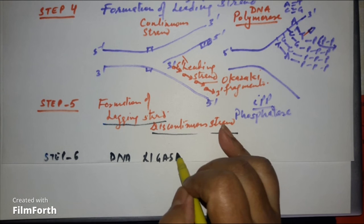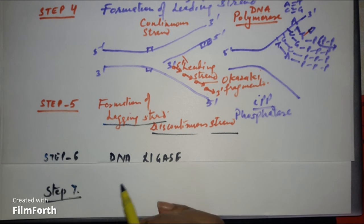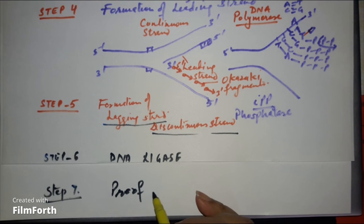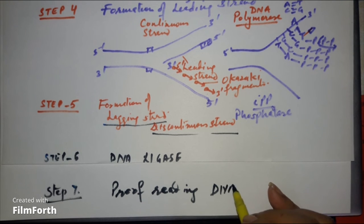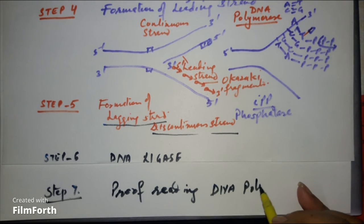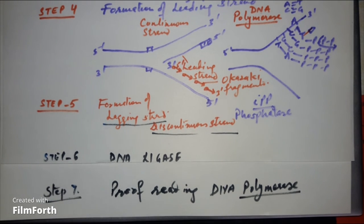And the last step is step number 7, proofreading. Proofreading, if there is something wrong, if there is some wrong base entry, proofreading will be done by enzyme polymerase only. DNA polymerase can go back and correct if there is some wrong base entry. Clear? So this is all about replication of DNA.